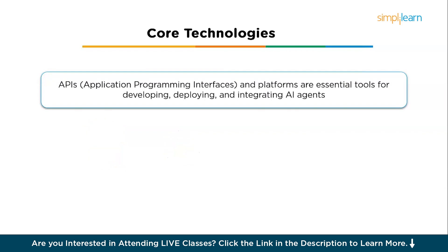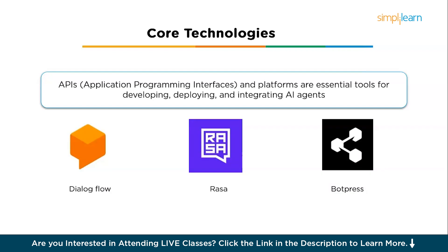APIs and platforms are also essential for developing, deploying, and integrating AI agents. Dialogflow is a popular platform by Google for building chatbots and voice assistants, providing natural language understanding with easy integration with Google services. Rasa is an open-source conversational AI framework with both machine learning and rule-based components, known for flexibility and self-hosting. Botpress is another open-source platform for building, managing, and deploying enterprise-grade AI-powered chatbots.